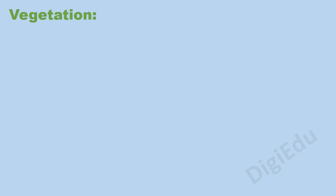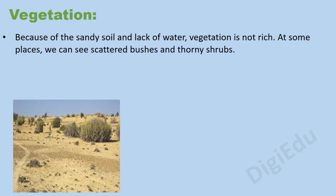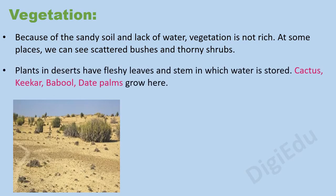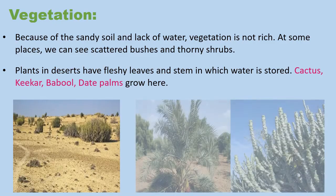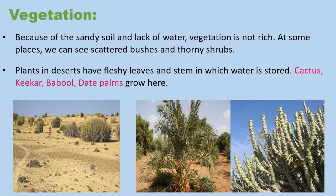Vegetation: Because of the sandy soil and lack of water, vegetation is not rich. At some places we can see scattered bushes and thorny shrubs. Plants in deserts have fleshy leaves and stems in which water is stored. Cactus, kikar, babul, and date palms grow here.